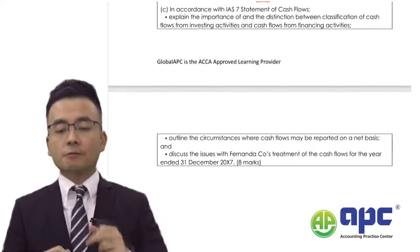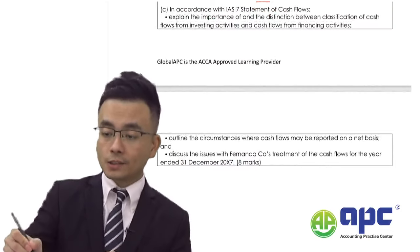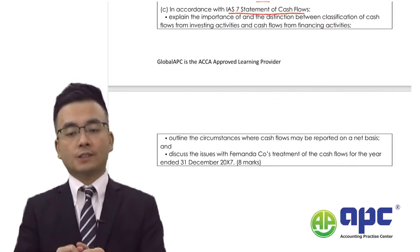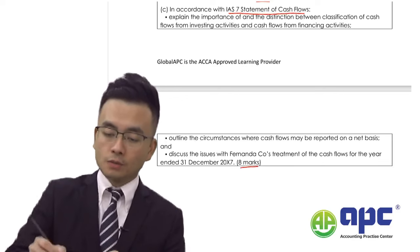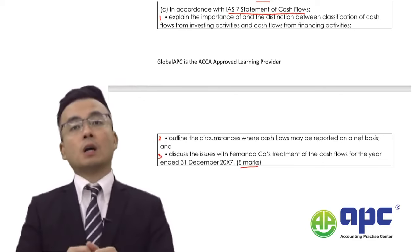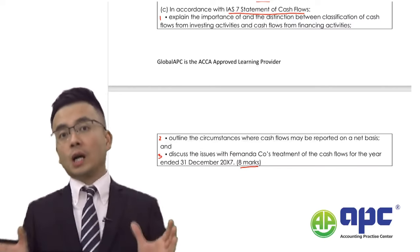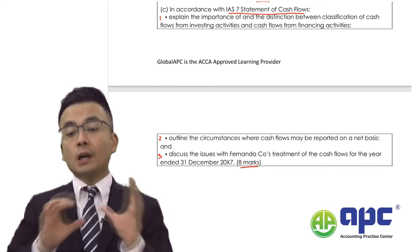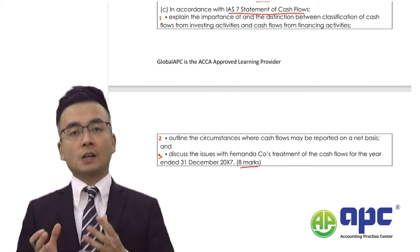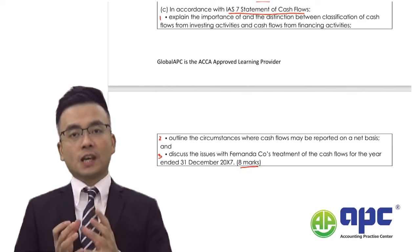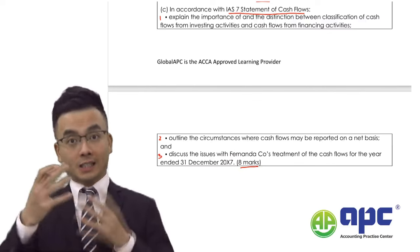The final requirement — IAS 7, statement of cash flows — is tested here. We are given eight marks for this three-part requirement. In the CBE exam, copy all the requirements into the word processor, use them as headings, and write eight sentences in total.